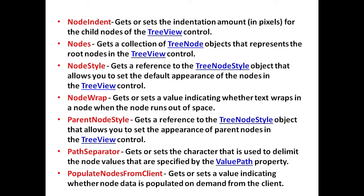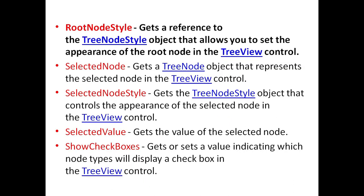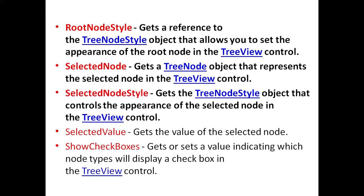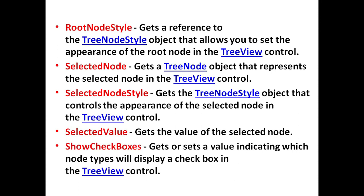PopulateNodesFromClient property is used to get or set a value indicating whether node data is populated on demand from the client. RootNodeStyle property is used to get a reference to the TreeNodeStyle object that allows the user to set the appearance of the root node in the TreeView control. SelectedNode property is used to get a TreeNode object that represents the selected node in the TreeView control. SelectedNodeStyle is used to get the TreeNodeStyle object that controls the appearance of the selected node. SelectedValue property is used to get the value of the selected node. ShowCheckBoxes property is used to get or set a value indicating which node type will display a checkbox in the TreeView control.